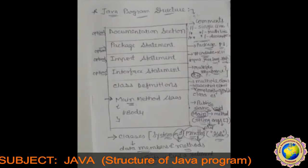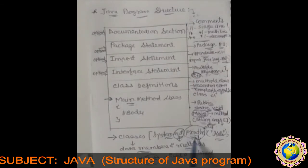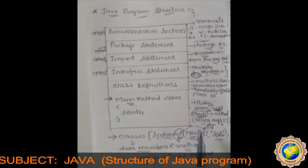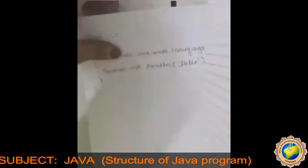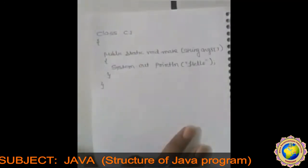This is all about the Java program structure. The method println always appends a new line character to the end of the stream, meaning any subsequent output will start on a new line. Note the semicolon at the end of the statement — every Java statement must end with a semicolon. Now we are going to see how to write a simple program.